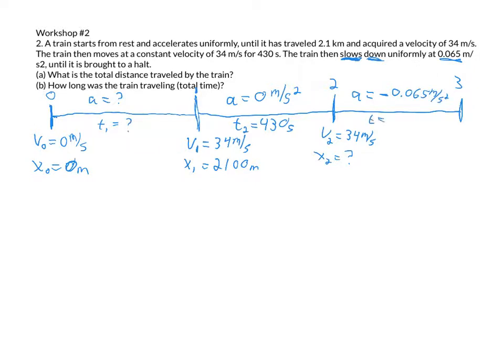And the time it takes to slow down, which we can call t3, is something we do not know. But we do know it slows down until it comes to a halt. So we know that our final velocity here is 0 meters per second, and we have some new location that we do not know.